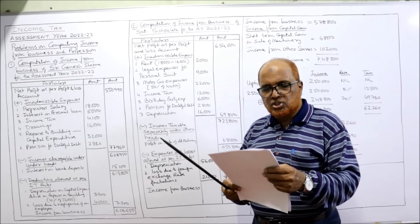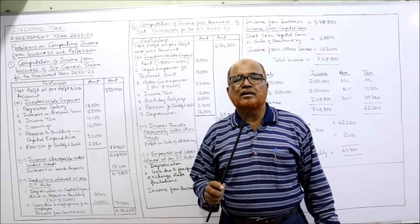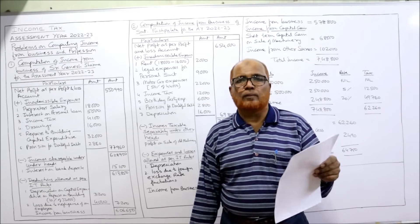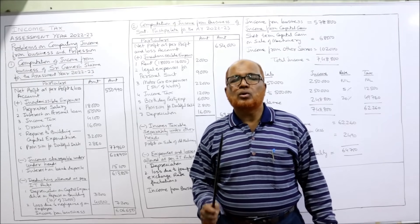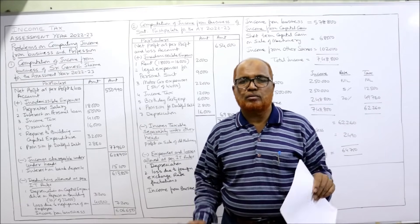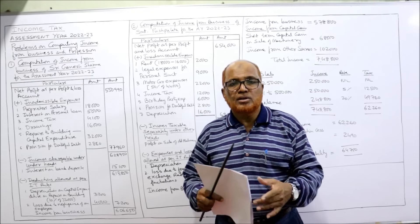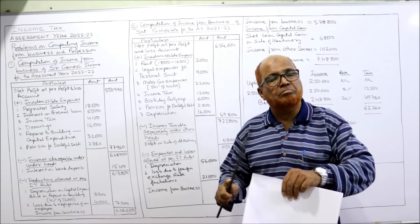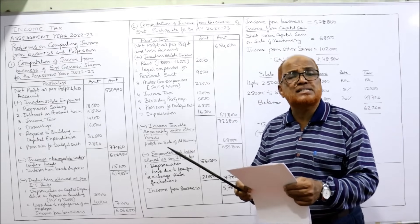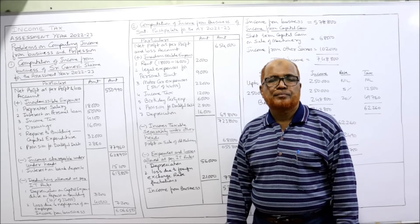Rent of the building is allowed as deduction. Interest on loan: for personal use 5,000, for business 7,000, total 12,000 debited to P&L. The Income Tax Act says interest paid on a loan taken for business is allowed, whereas interest paid on a loan taken for personal use is not allowed. So interest on personal loan — 5,000 — disallowed and added back as inadmissible.